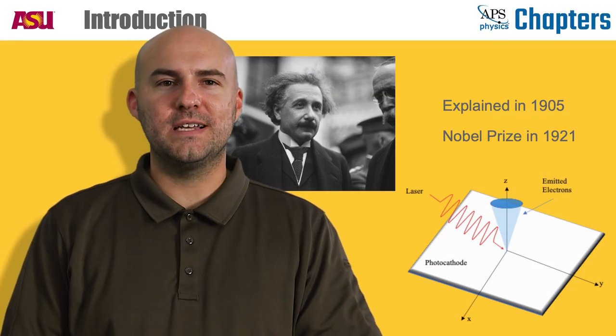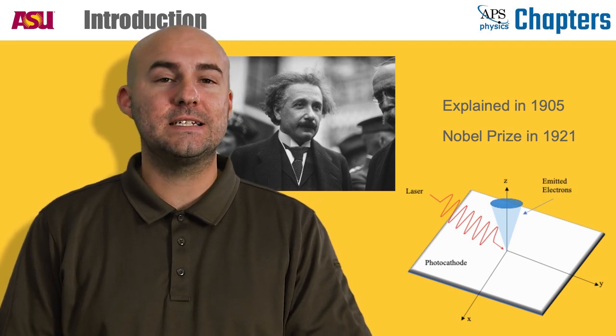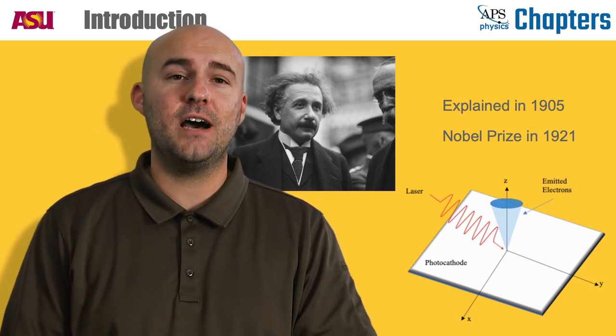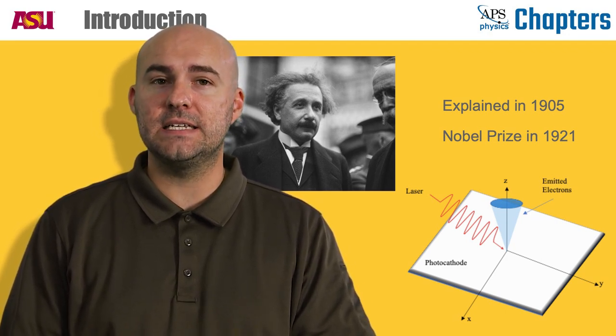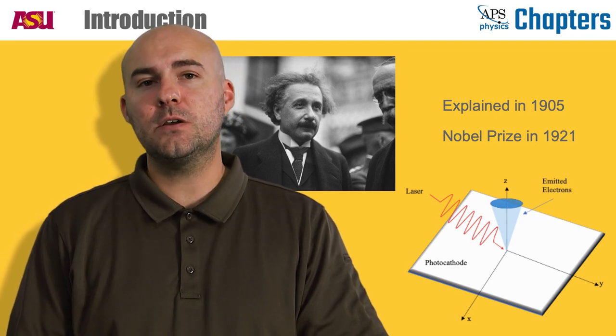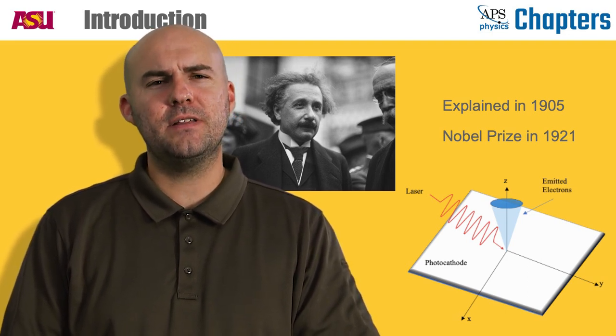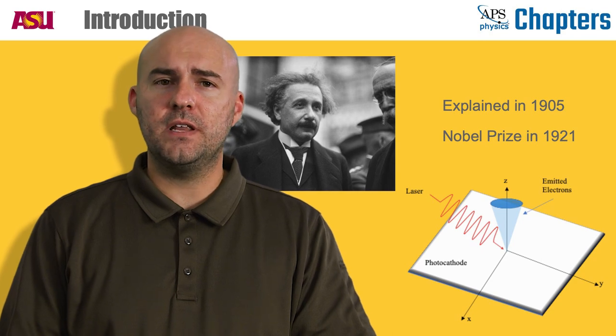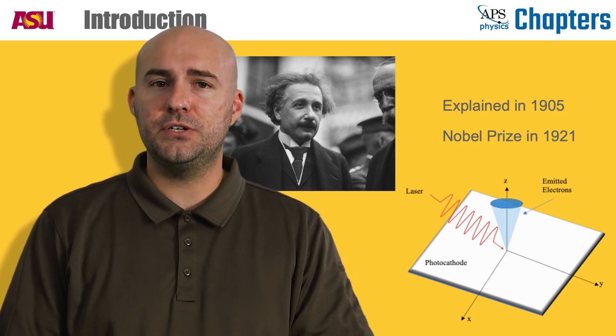Photoemission is a quantum mechanical process that was first explained by Albert Einstein in 1905 and was actually the topic for which he received his Nobel Prize in 1921. Since it is a quantum mechanical process, it is fairly complicated. But for the purpose of this video, we can simplify it by looking at this cartoon.